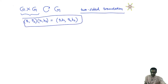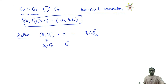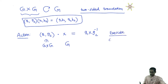Here is the definition of the action: how do I make G cross G act on G? I take a pair G1 comma G2 in G cross G, and a point X in the set G. I use G1 to do a left translation and G2 to perform a right translation. So the action definition is: the pair (G1, G2) acting on X gives me G1 X G2 inverse. This is the two-sided translation. Here is a little exercise: check that this defines an action.